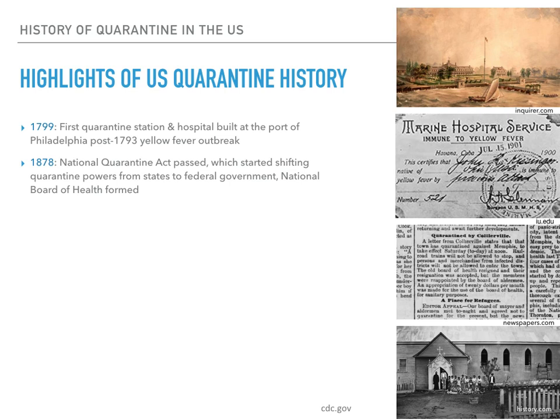The first quarantine station and hospital in America was built at the Port of Philadelphia after a yellow fever outbreak in 1793. A single case of yellow fever could put passengers and crew under quarantine for as long as six months. At the time, hospitals were largely devoted to the care of merchant sailors, which led to the formation of the Marine Hospital Service. In 1878, the National Quarantine Act vested quarantine authority to the Marine Hospital Service. This was the start of the shift of quarantine powers from states to the federal government, and it also established a National Board of Health.